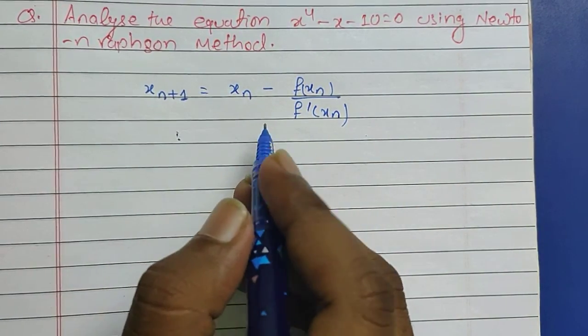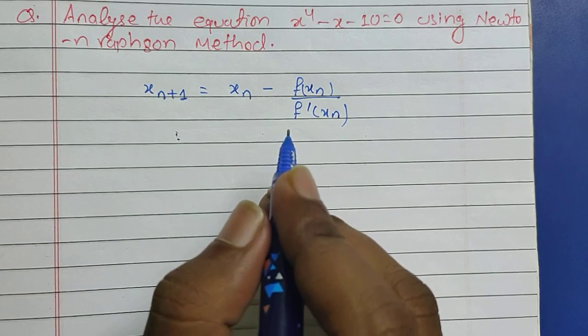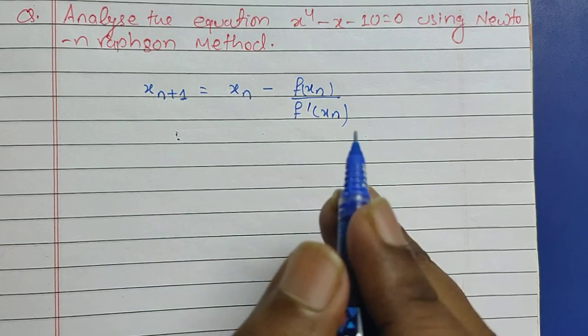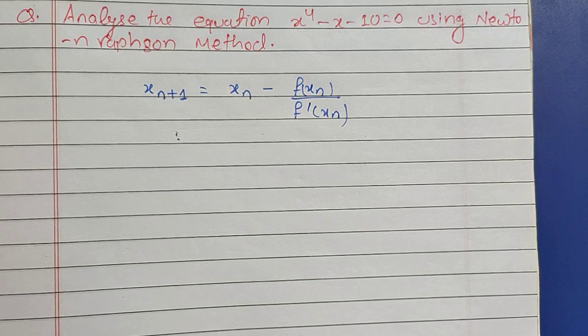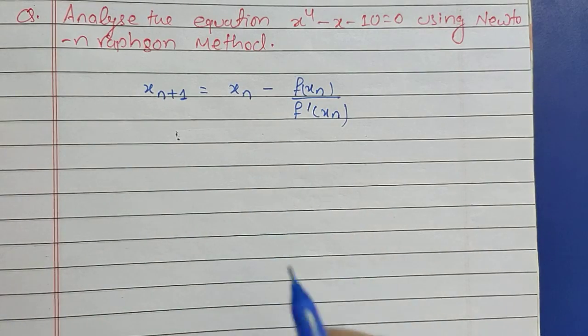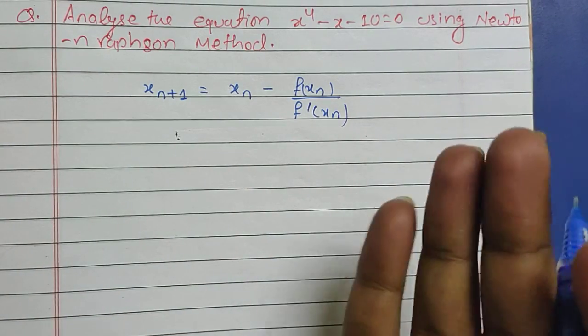So again I will be doing the same process which I have done in the bisection method and regular falsi method, that is I have to take two random numbers which will be either one and two or three.